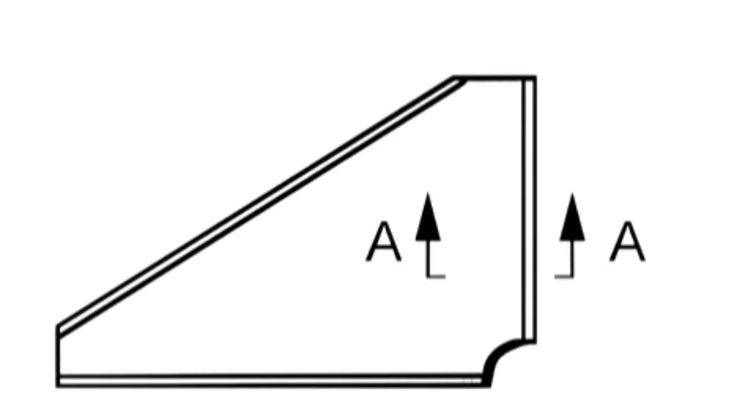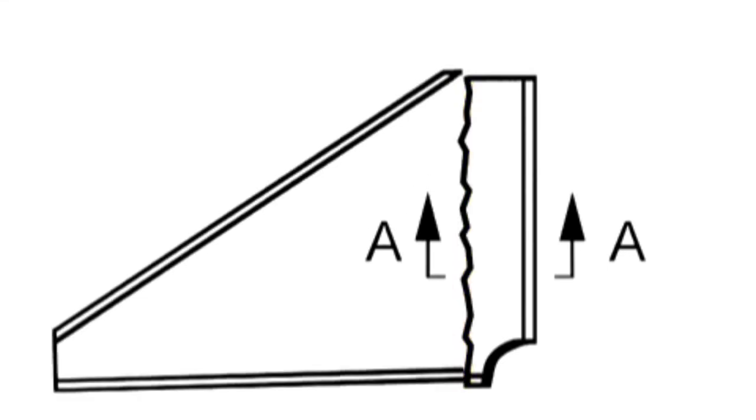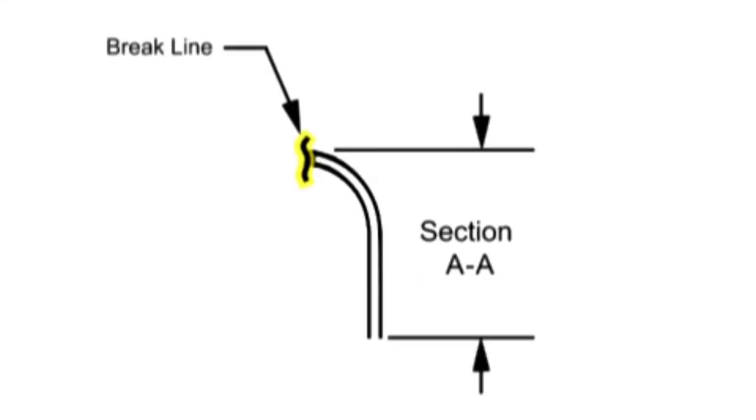A partial section view shows detail of an object without drawing conventional views. The cutting plane line only partially cuts the object, and the section view ends with a short brake line to indicate where the cutting plane ended.